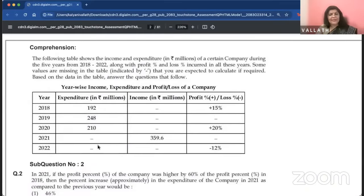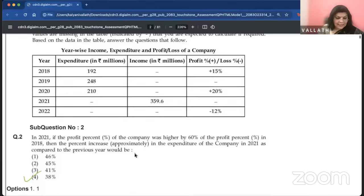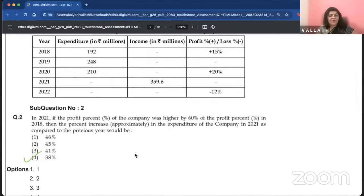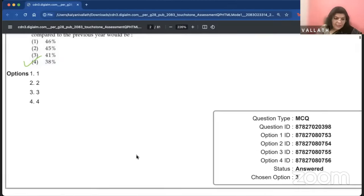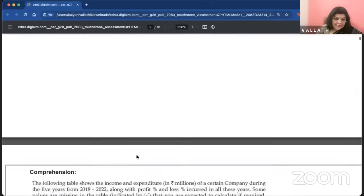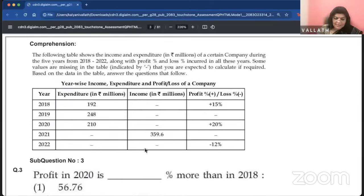Here, their answer is option A. That is 250.976. That is the income of the company in 2022 in million. The following table shows the income and expenditure of a certain company. The option given is option number four, 38%.